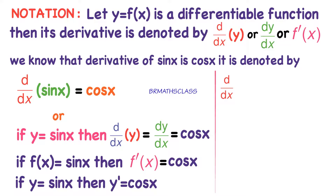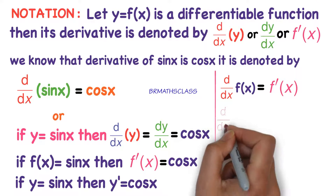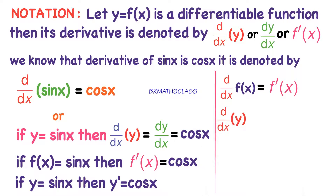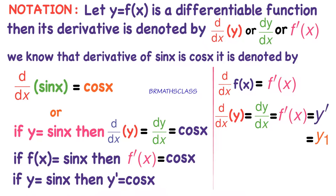So, dy by dx of f of x, which is also written as f dash of x — that means derivative of f of x with respect to x is f dash of x. Conclusion: dy by dx of y is the same as dy by dx, which means derivative of y with respect to x. This is the same as f dash of x, which means derivative of f of x. Equal to y dash, which means derivative of y. Which is the same as y1 — in suffix we write 1 — and y1 means derivative of y.